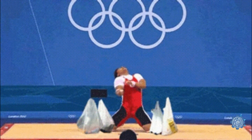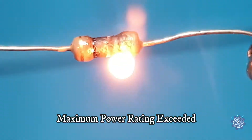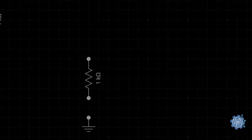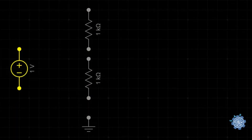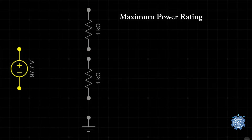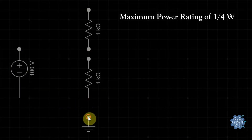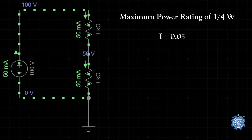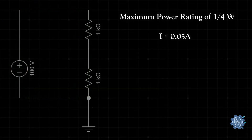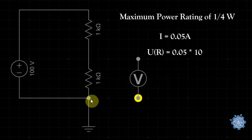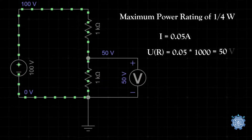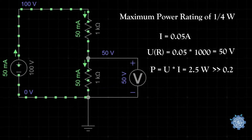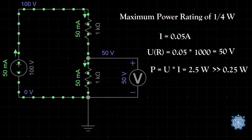As resistors have a maximum power rating which, when exceeded, can destroy the parts. Imagine using two resistors with a resistance value of 1kΩ that have the maximum power rating of 0.25W to divide a 100V voltage. We can immediately see that the current will be 0.05A through the resistors, which multiplied with the resistance of each resistor will give a 50V voltage across each resistor. This leads to a power of 2.5W which will totally destroy these resistors.